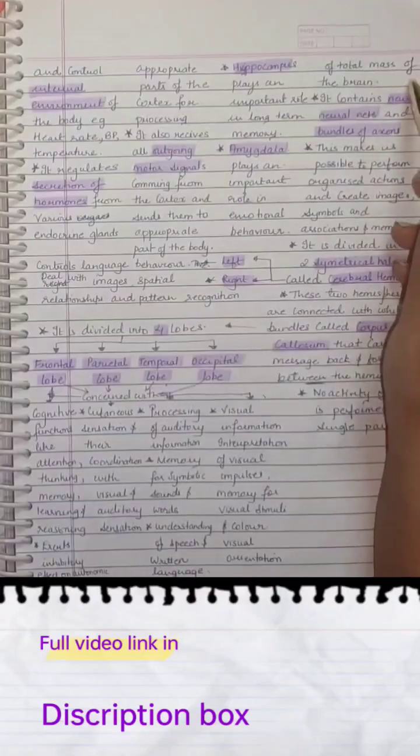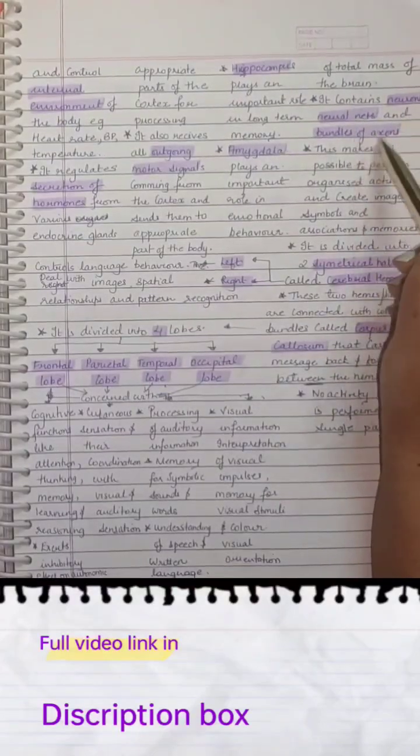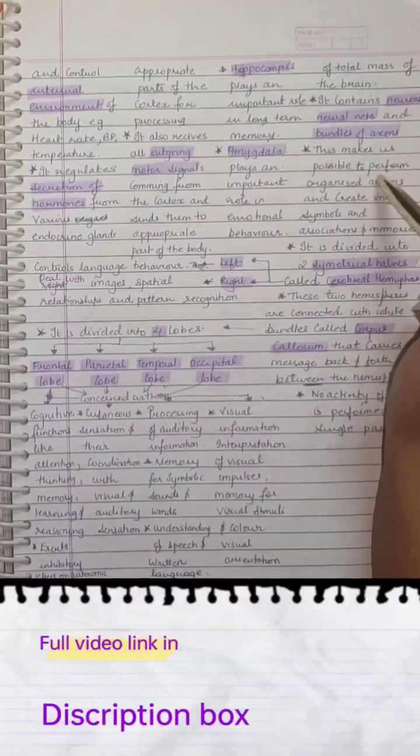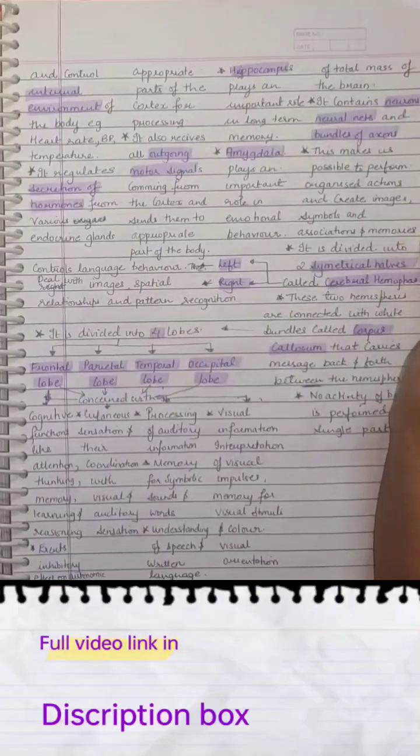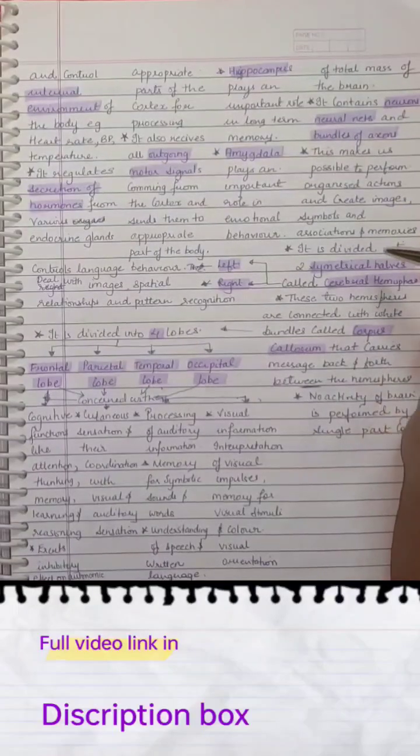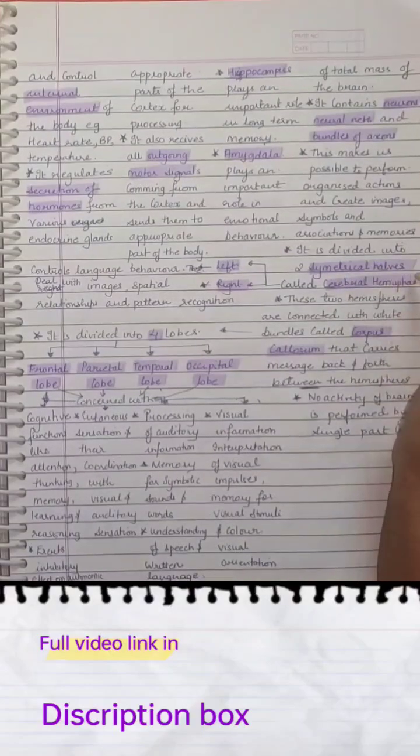It makes up two-thirds of the total mass of the brain. It contains neurons, neural nets, and bundles of axons. This makes it possible to perform organized actions and create images, symbols, associations, and memories. It is divided into two symmetrical halves called cerebral hemispheres.